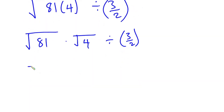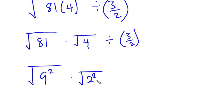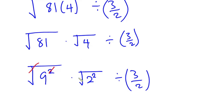Now 81 is the same as 9 squared, and 4 is the same as 2 squared, and this is divided by 3 over 2. You can see that the square will cancel the square root, giving us 9, and similarly the other square cancels its square root, giving us 2. So we have 9 times 2, divided by 3 over 2.